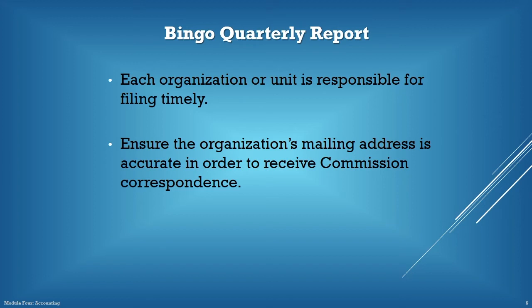The commission mails the quarterly report form to all active organizations and units approximately 30 days before its due date to the organization's address of record. Each quarter, we find organizations who move without notifying the commission of a change in mailing address in a timely manner, which results in organizations not receiving the quarterly report form. Not receiving the form is not a valid excuse for filing late, as each licensee or unit is responsible for filing the quarterly report timely. Please ensure that the organization's mailing address is kept current, therefore avoiding potential penalties for late filing.